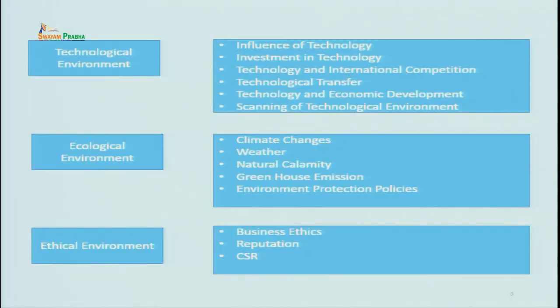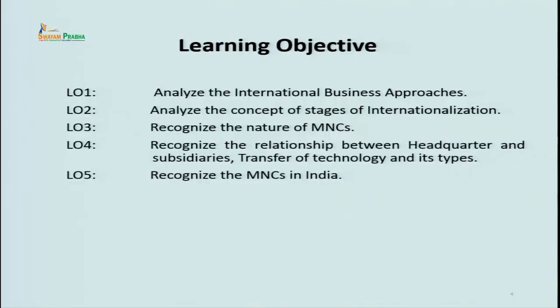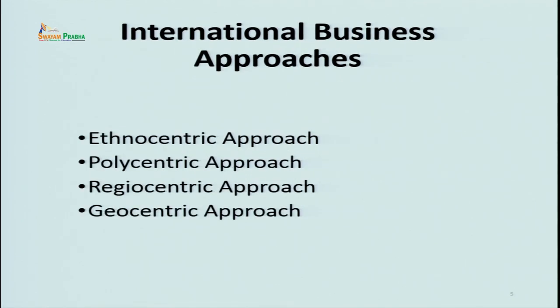I hope you have understood those topics. Now we are going to begin with lecture number six. The learning objectives are: one, analyze the international business approaches; two, the concept of stages of internationalization; three, recognize the nature of MNC; four, recognize the relationship between headquarters and subsidiaries; transfer of technology and its types will also be discussed. We will also cover recognizing MNCs in India. It will be thrilling for you to know that a single company can have multiple approaches when entering a foreign market. Let's begin with the international business approaches — the different orientations a company can have. This EPRG model was developed by Perlmutter in 1975. Before that it was known as the EPG model; later, regiocentrism was added to make it the complete EPRG model.